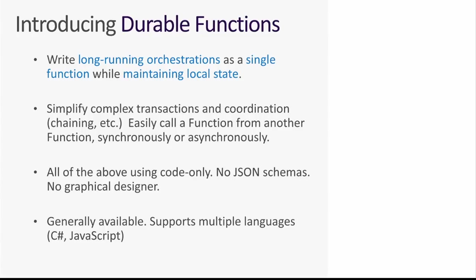Now let's talk about Durable Functions. You already know all the problems it's solving, so let's define it. Durable Functions is a framework — a free open-source framework for Azure Functions — that allows you to write long-running orchestrations as a single function and maintain state for all of the calls that need to happen. You can write a single orchestration that might last the duration of an entire week or a month, that might call multiple functions, that might be very long-running, or have to wait for human interaction. And it just works and still runs in a serverless way.